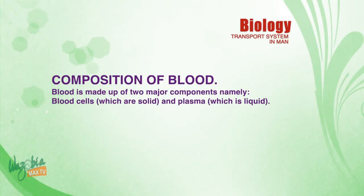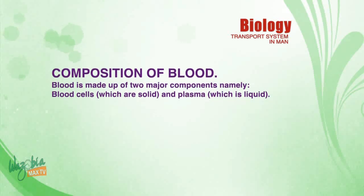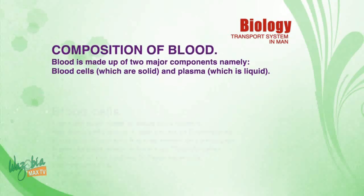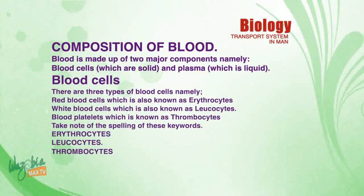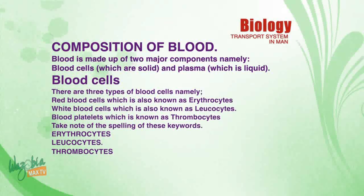Now let's discuss the composition of blood. Blood is made up of two major components: blood cells, which are solid, and plasma, which is liquid. There are three types of blood cells: red blood cells, also known as erythrocytes, and white blood cells, also known as leukocytes.